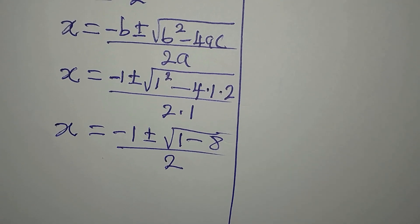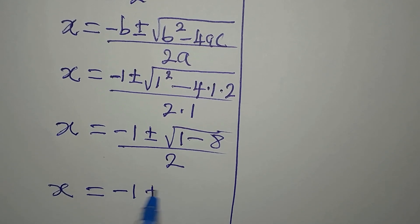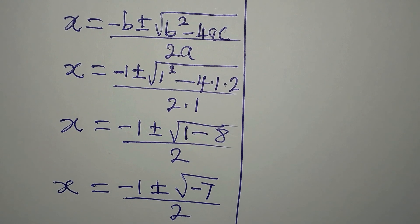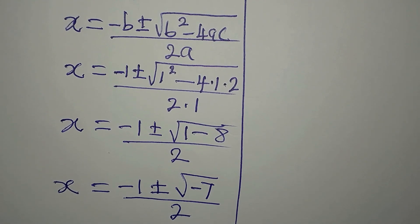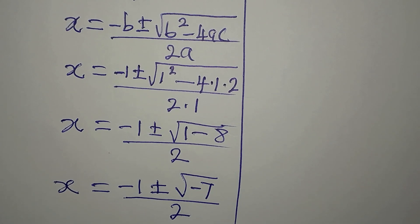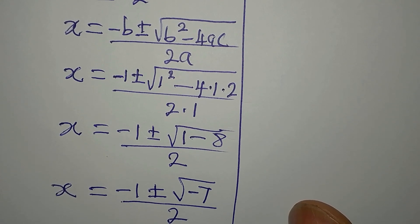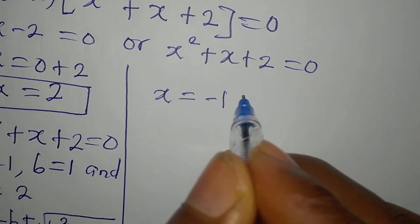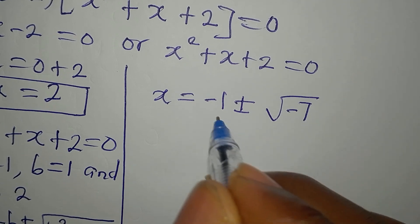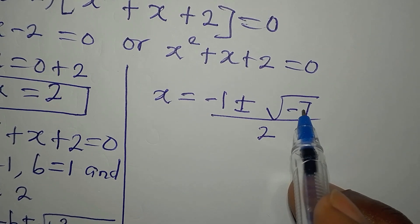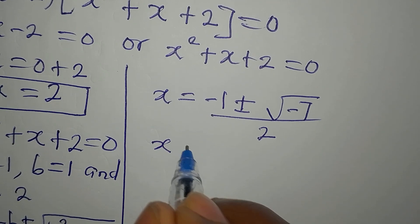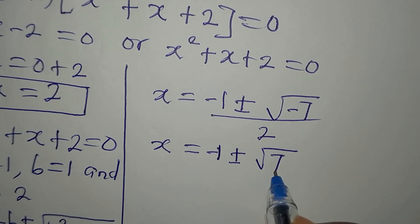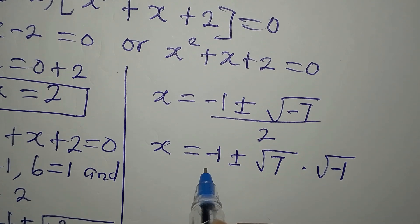So x equals minus 1 plus or minus the square root of negative 7, divided by 2. Now that we are getting the square root of a negative number, it means we will not have a real solution from here — we are going to have an imaginary solution. Let's still keep going.